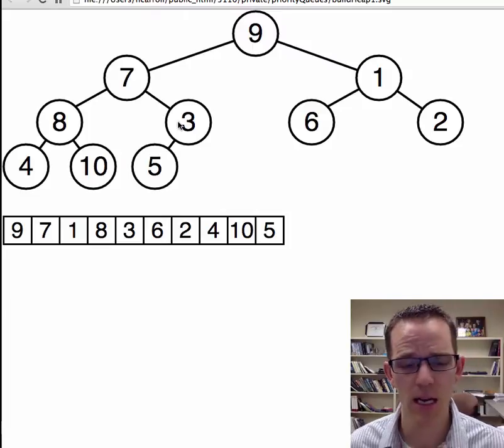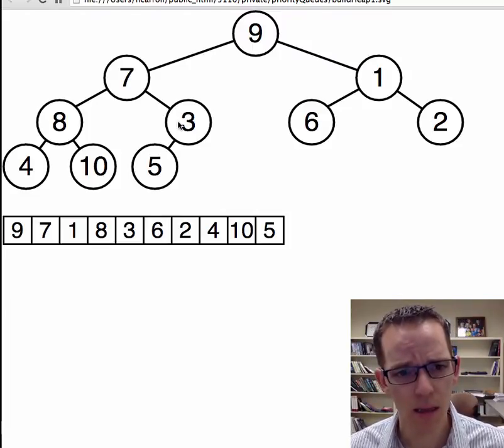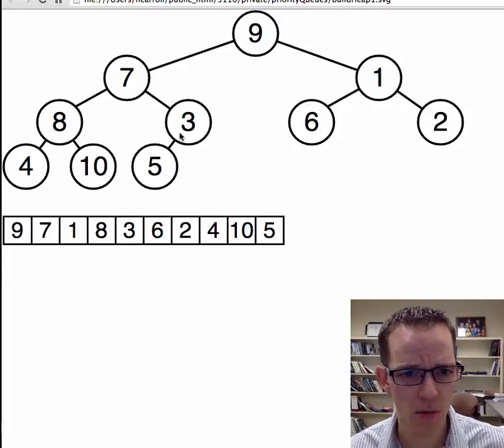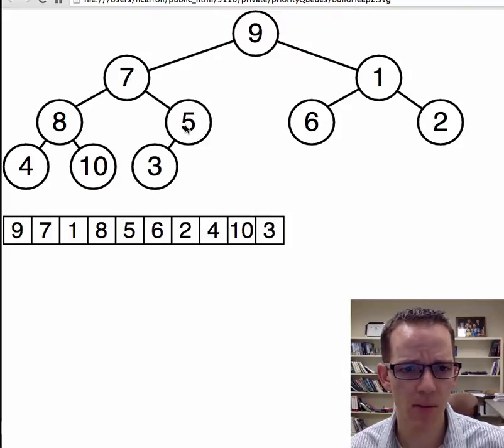Three actually has a child, so that's kind of interesting. So we need to heapify starting at three for this sub-heap, and so to do that, we need to find its largest, the child that has the largest value, and bubble it down, okay?